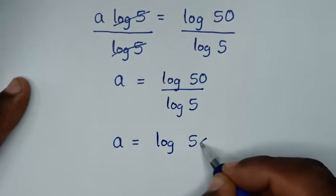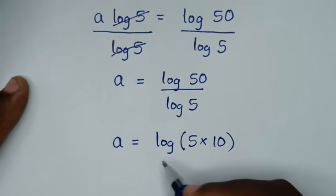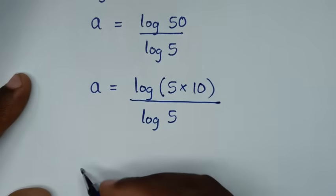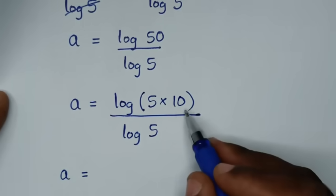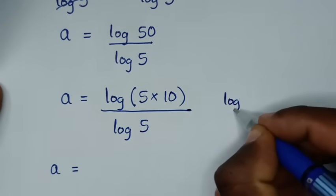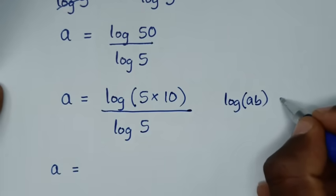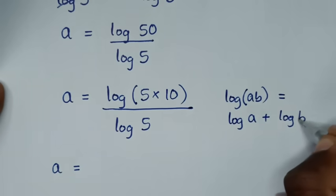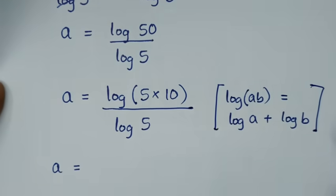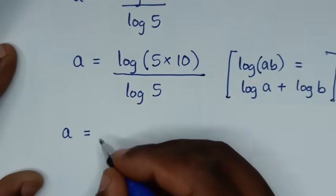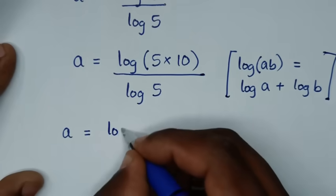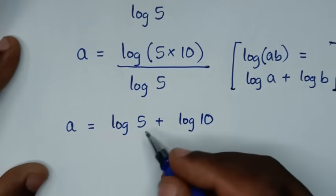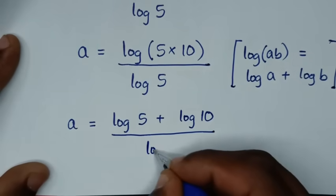In the next step, a is equal to log of 50. Now 50 is the same as 5 times 10, so we apply the log product rule: log of 5 times 10 is the same as log of 5 plus log of 10, then all over log of 5.